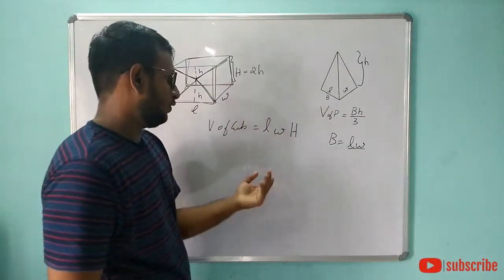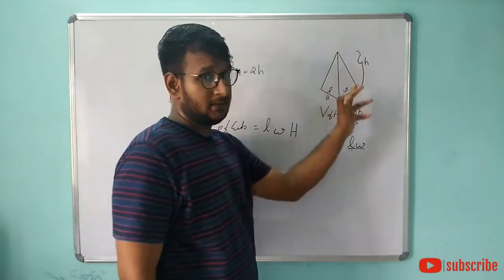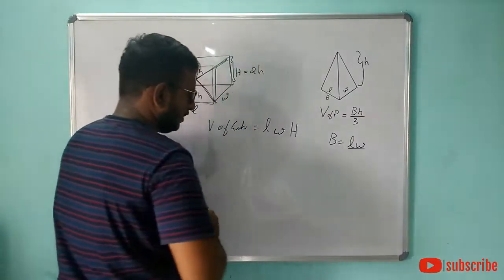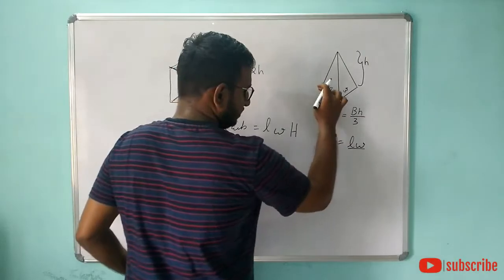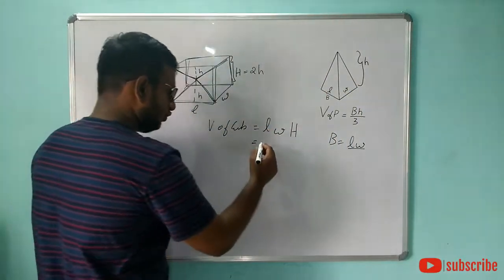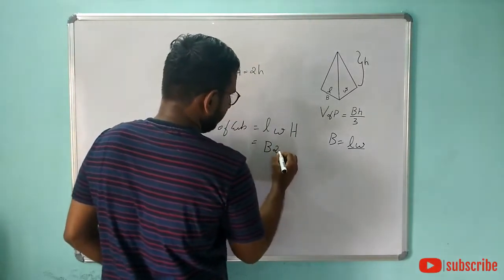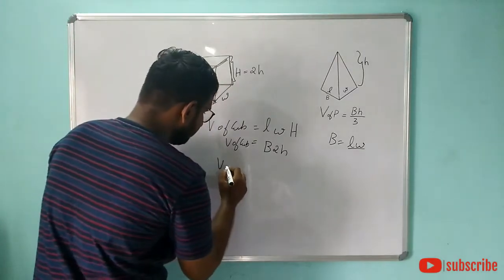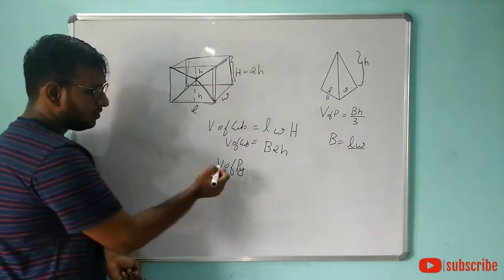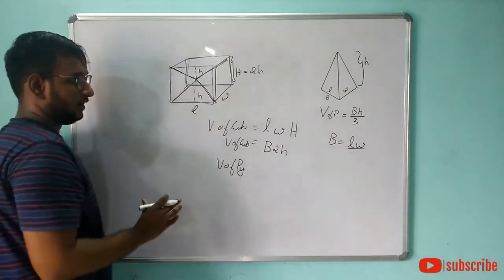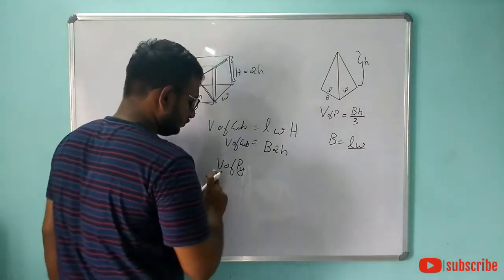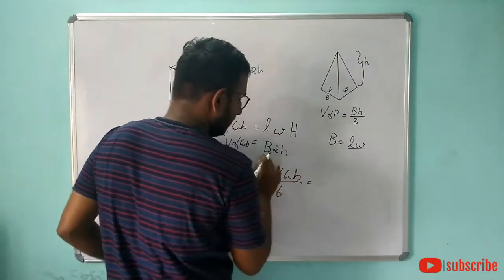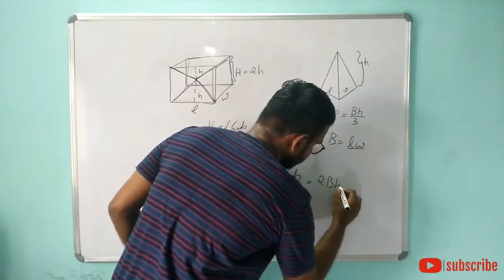We can convert this to the pyramid. Capital H is 2h, so the full height is 2H. The base is L times W. The volume of pyramid equals volume of cuboid divided by 6. The volume of cuboid is base times 2H, so we can write it as 2 times base times H divided by 6, which simplifies to base times H divided by 3.